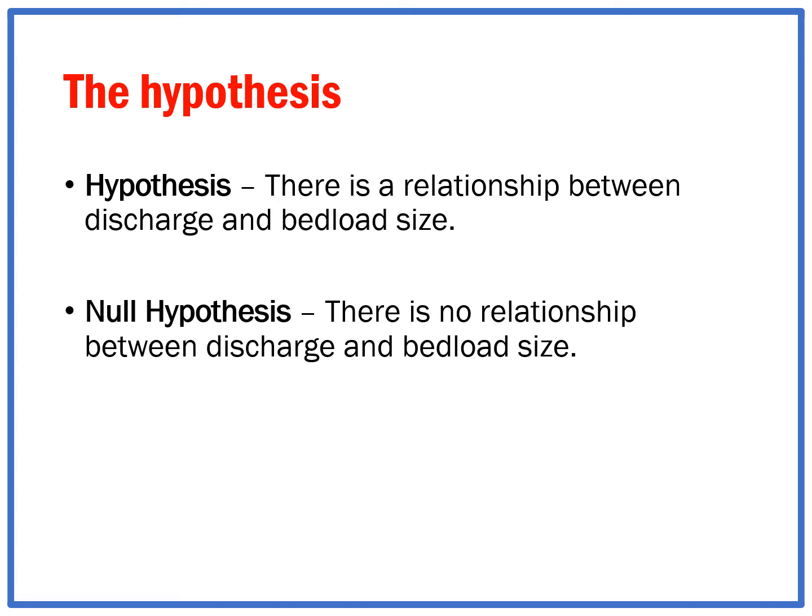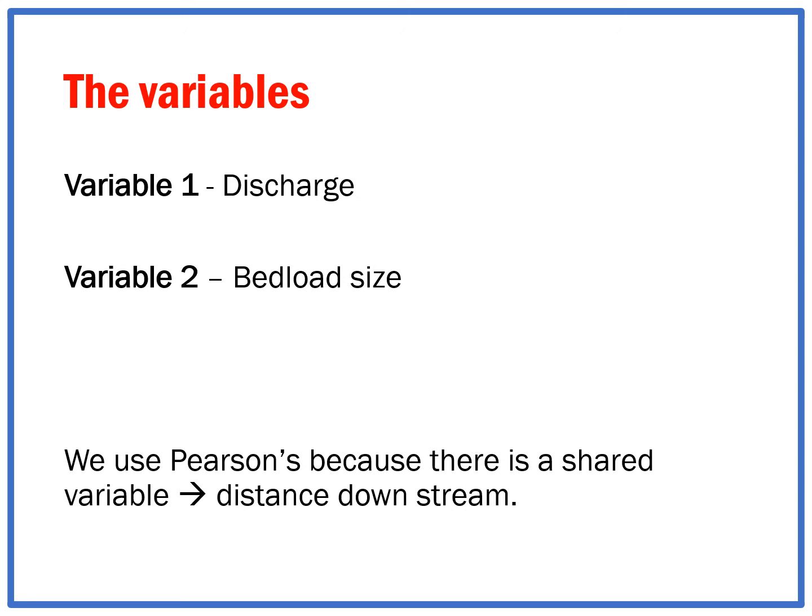Like any statistical test, it all begins with a hypothesis. In this case, an example of data collected along a river: there is a relationship between discharge of the river and bed load size. The null hypothesis being there is no relationship between the river discharge and bed load size. Variable one is the discharge, variable two is bed load size.